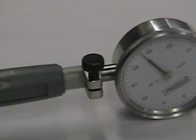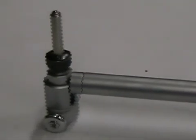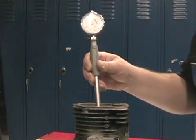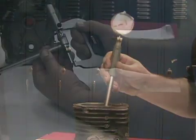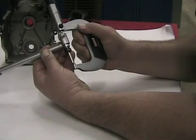The dial bore gauge combines a dial indicator with a telescoping gauge. It is used with an outside micrometer to measure holes and comes in different sizes. It is an accurate tool that can measure within one thousandth of an inch and is often used to measure cylinder wear and size.